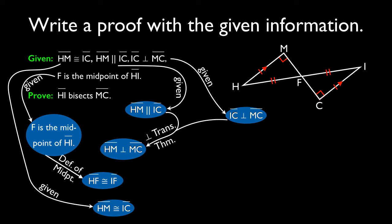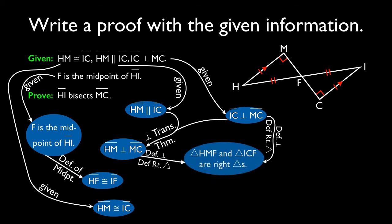Oh, now that we have these perpendicular thingy-ma-jigs here, we know that we have two right triangles by the definition of perpendicular and the definition of right triangles.